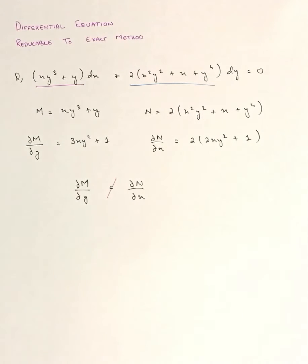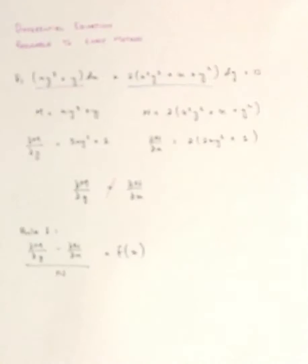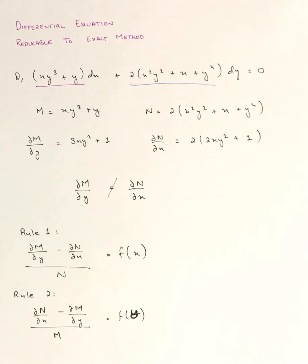We need to use the reducible-to-exact method. This method has two rules. Rule 1: (∂M/∂y − ∂N/∂x) / N should give a function of x alone. Rule 2: (∂N/∂x − ∂M/∂y) / M should give a function of y alone. We use these two rules to find the integrating factor.